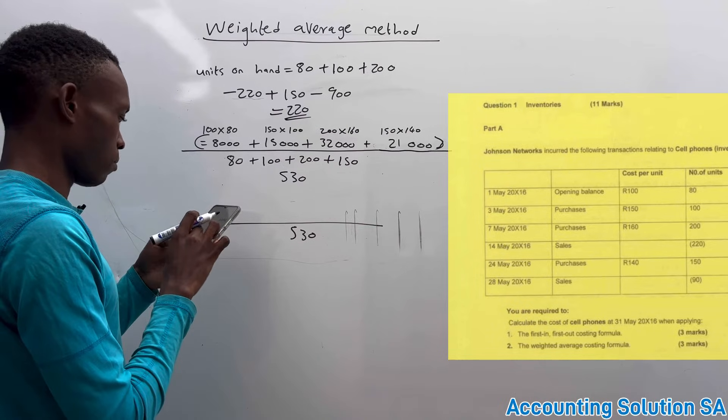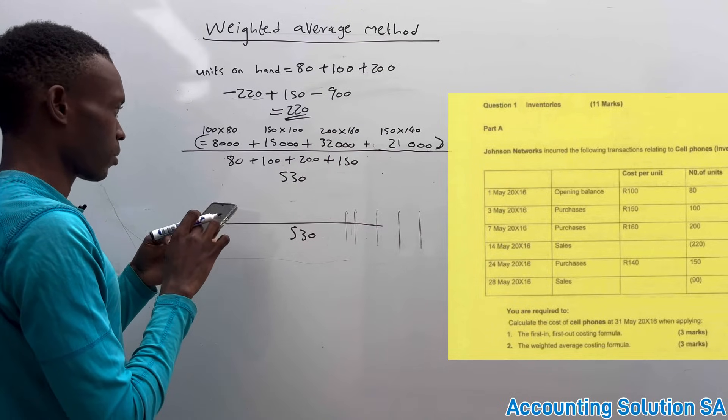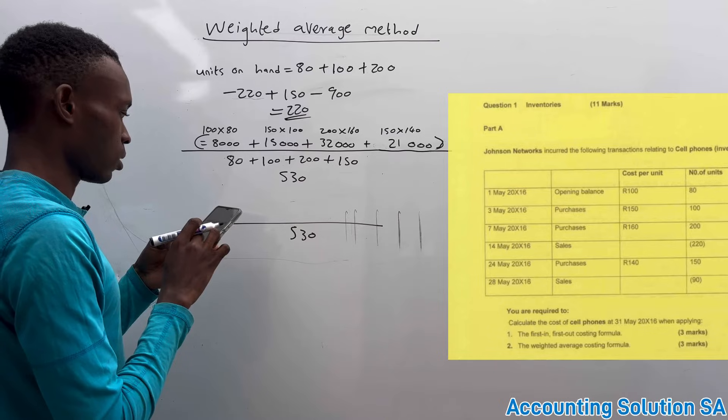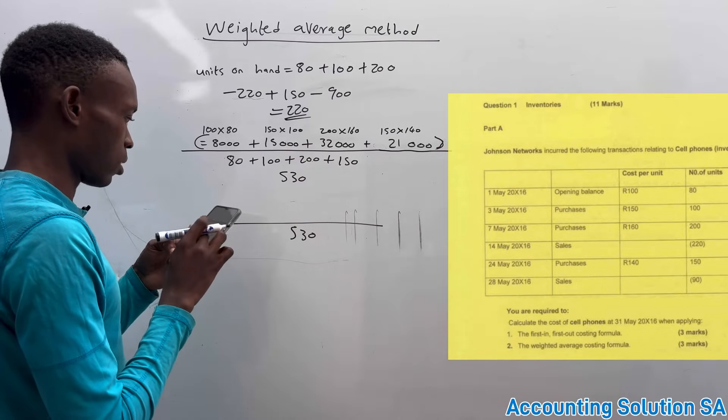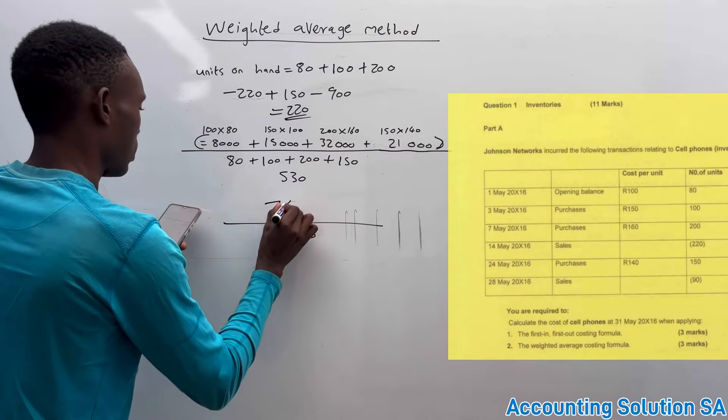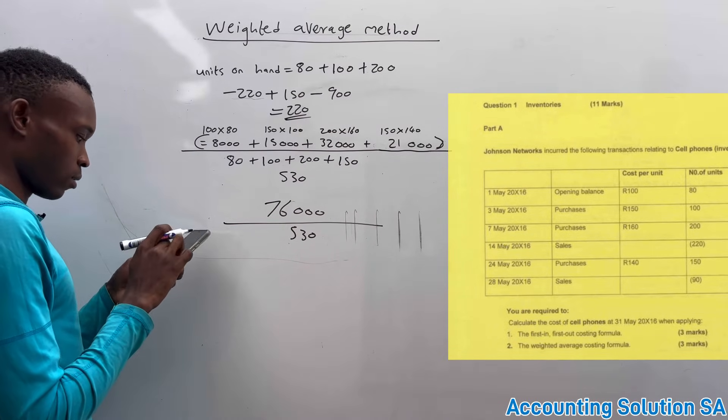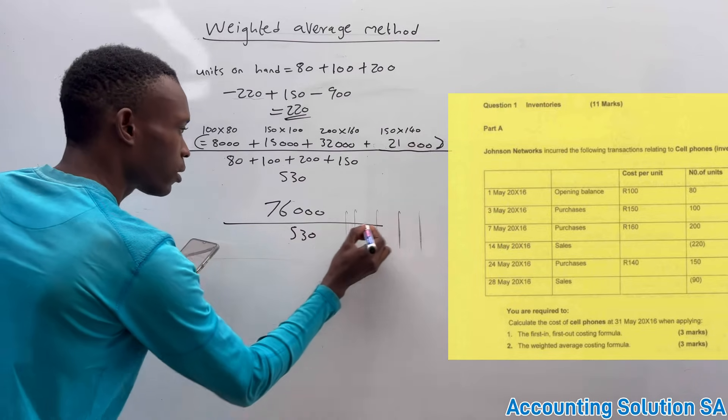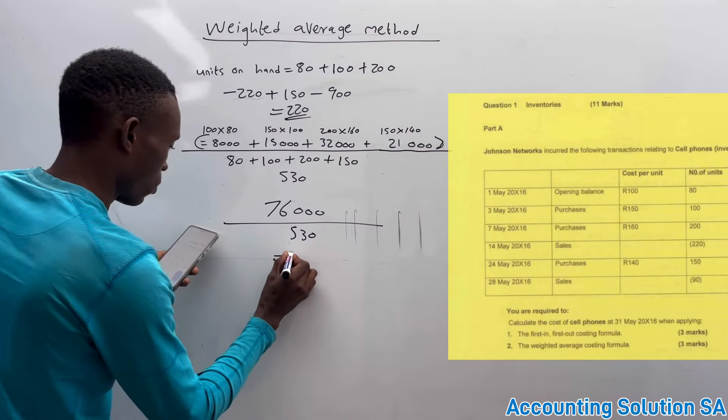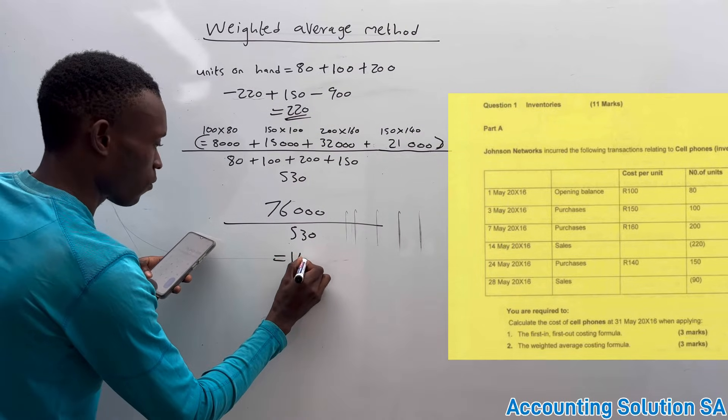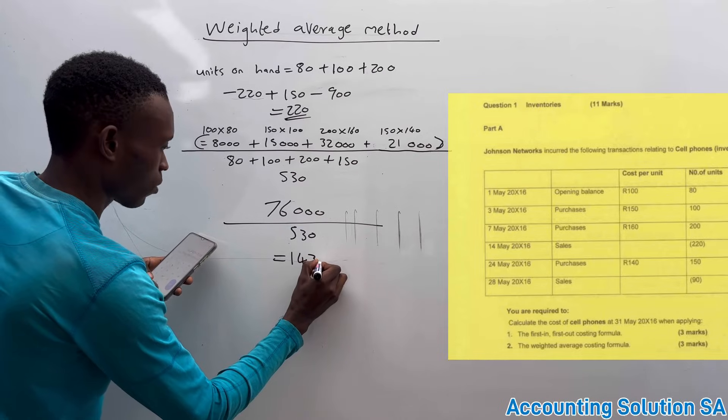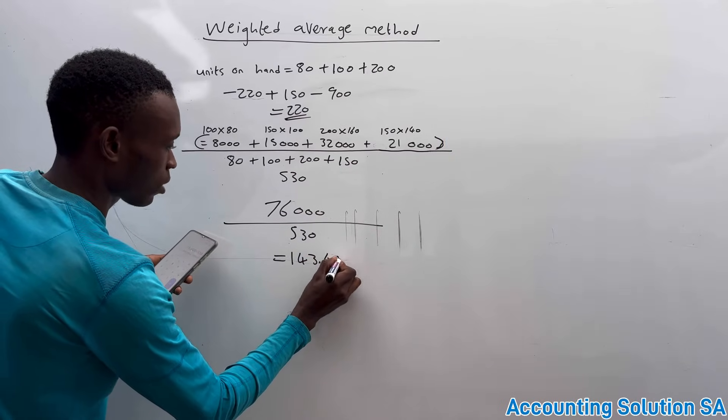8,000 plus 15,000 plus 32,000 plus 21,000, let's give us 76,000. Then after that, you're gonna divide it by 580, and it's gonna give us 143.40.